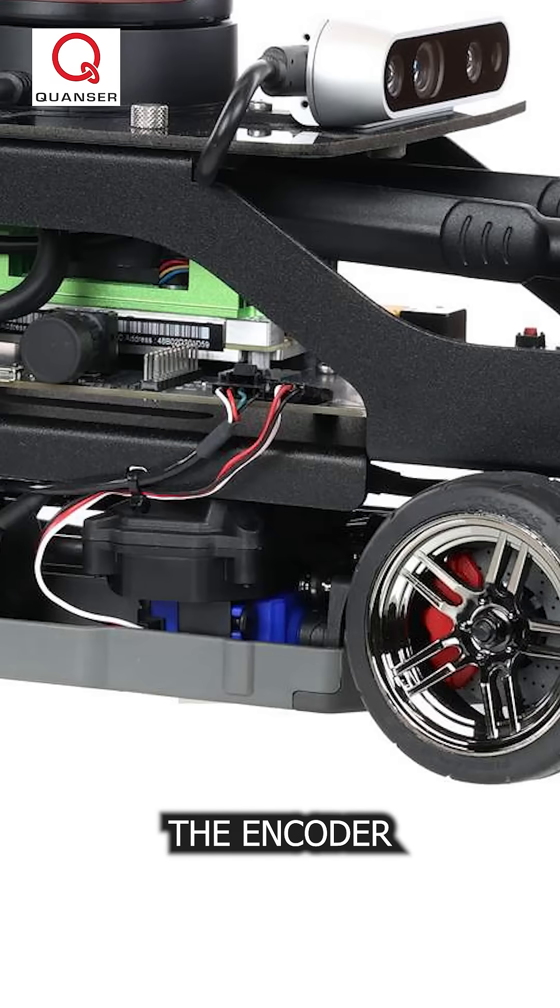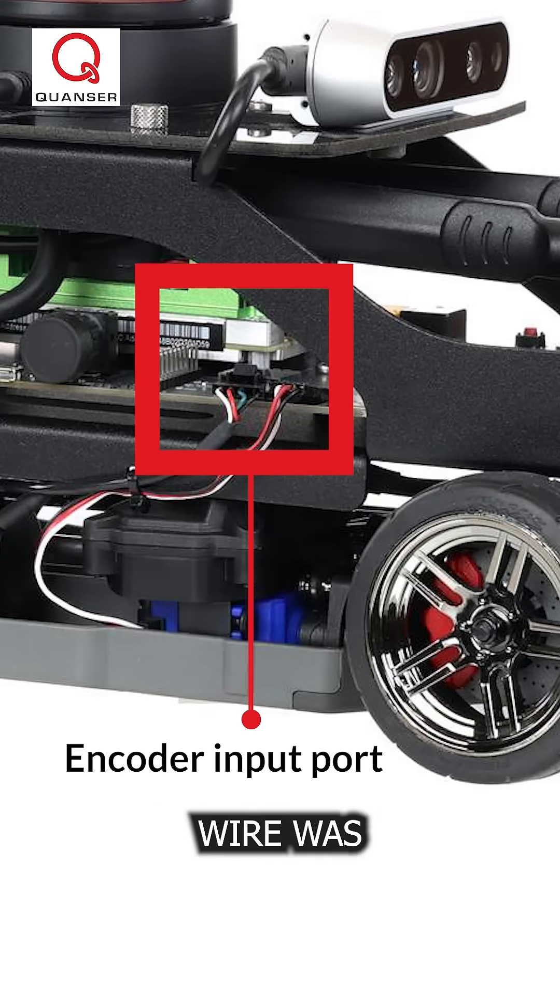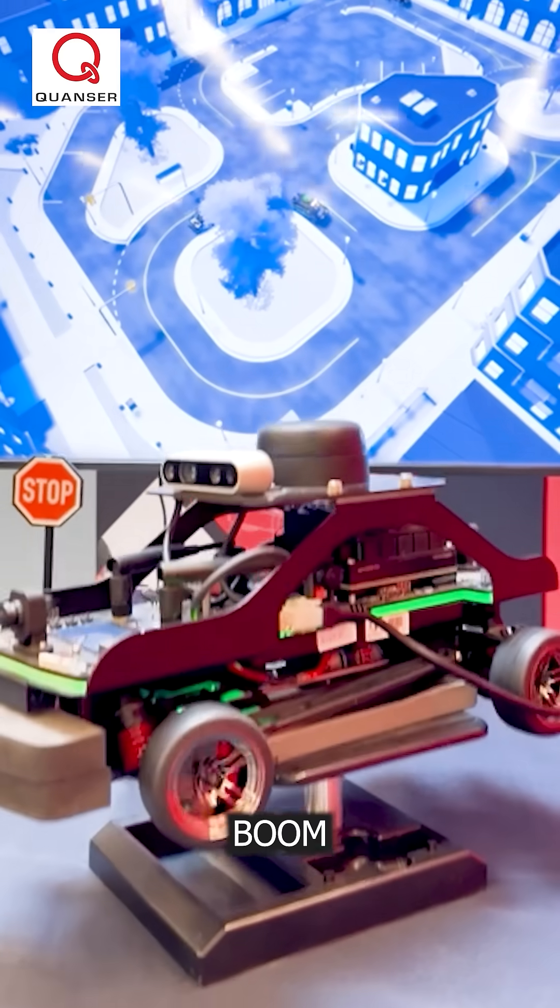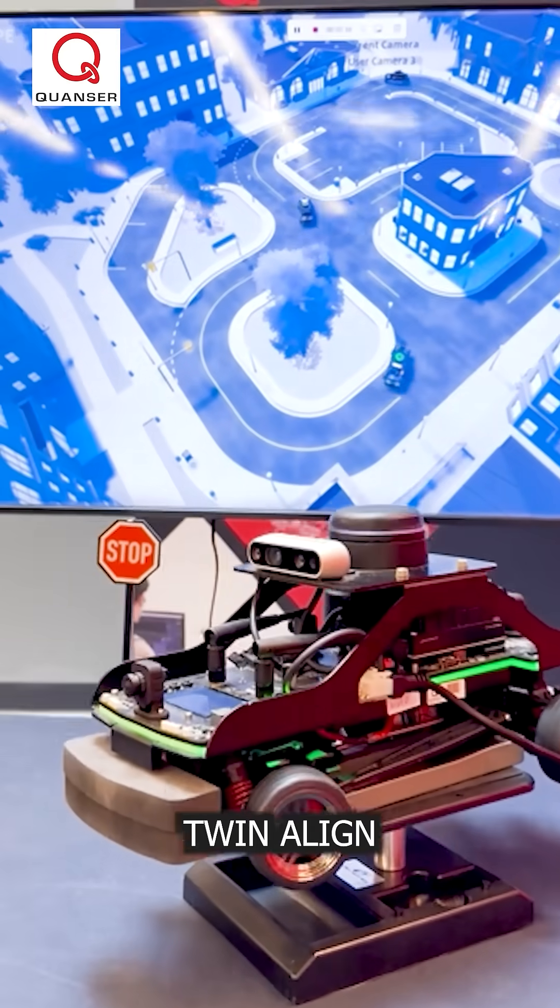Let's closely inspect the encoder data. The encoder wire was disconnected from its input port. Let's plug it back in. Boom. The physical car and digital twin align again perfectly.